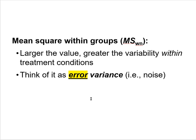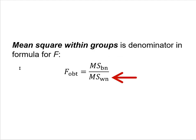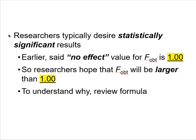The larger the mean square within groups value, the greater the variability within the treatment conditions. Mean square within groups is the denominator in our formula for the obtained F statistic. Since researchers typically want statistically significant results and the no-effect value for F is 1.0, researchers hope that their obtained F value will be bigger than 1.0 — which requires a large numerator and/or a small denominator.